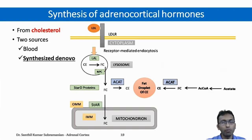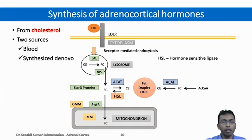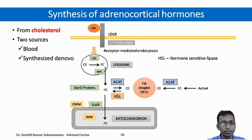De novo synthesis is mainly from acetate. It goes through various processes and the cholesterol thus formed is stored in the form of fat droplets in the cytoplasm. The fat droplets are acted upon by an enzyme called hormone-sensitive lipase, which converts the cholesterol esters into free cholesterol that can be utilized for the synthesis of adrenocortical hormones.